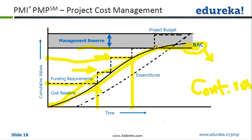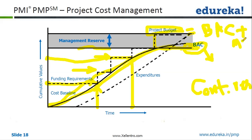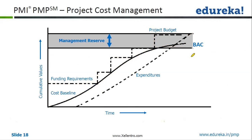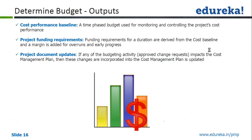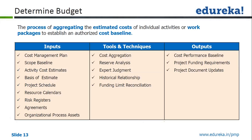When I say project budget, I add management reserve to budgeted actual cost and I get this project budget. Essentially, project budget equals BAC plus management reserve — BAC plus MR. That's what I wanted to tell you from a cost baseline perspective. Now we'll go back to the Determine Budget slide.